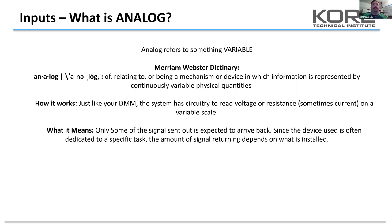Analog refers to a signal that's variable. Where a digital input is looking for a go or no-go signal, an analog is going to be variable — just like your digital multimeter when you've got it in ohms mode as opposed to continuity beeper. In ohms mode it looks for a huge range of resistance. For an analog sensor, you're not going to be getting back all of the voltage sent out all of the time — only some of it is going to come back.